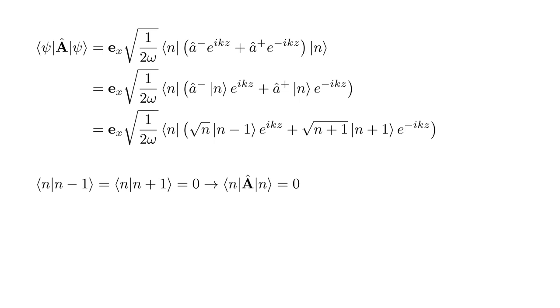The projections of the n minus one and n plus one states onto the n state vanish. So, the expected value of the field operator also vanishes, no matter how many photons are present. Now this doesn't mean that the field vanishes, only that at a given time and place, the field is equally likely to be positive or negative, with an average value of zero.